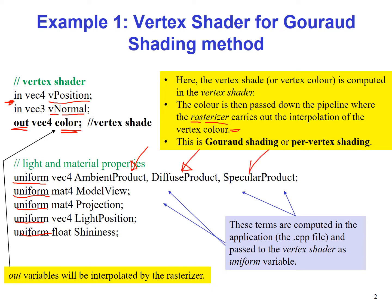And we have the specular product. These are all of type vec4. We have the ModelView matrix, the Projection matrix, we have the position of the light source, and we have the shininess coefficient as a uniform float variable. All these terms are computed in the cpp file.